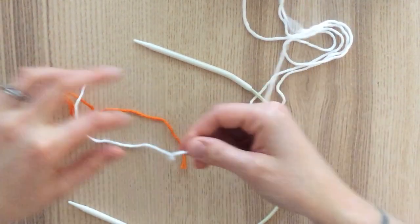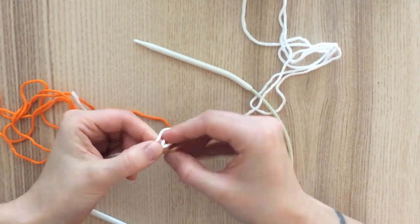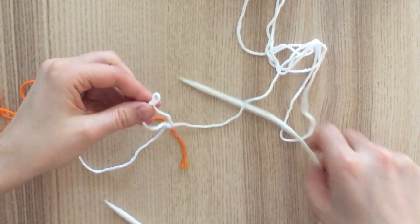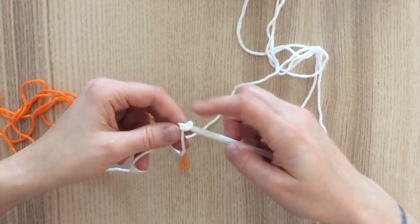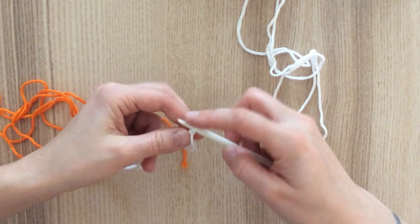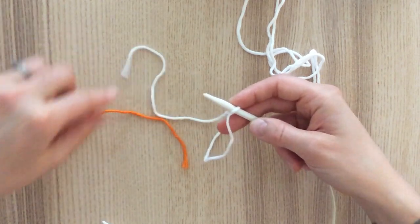To get started on the provisional cast on, you simply do a regular slip knot and then you slip it onto your right hand needle with the tail that goes to the yarn on top and the short tail on the bottom.